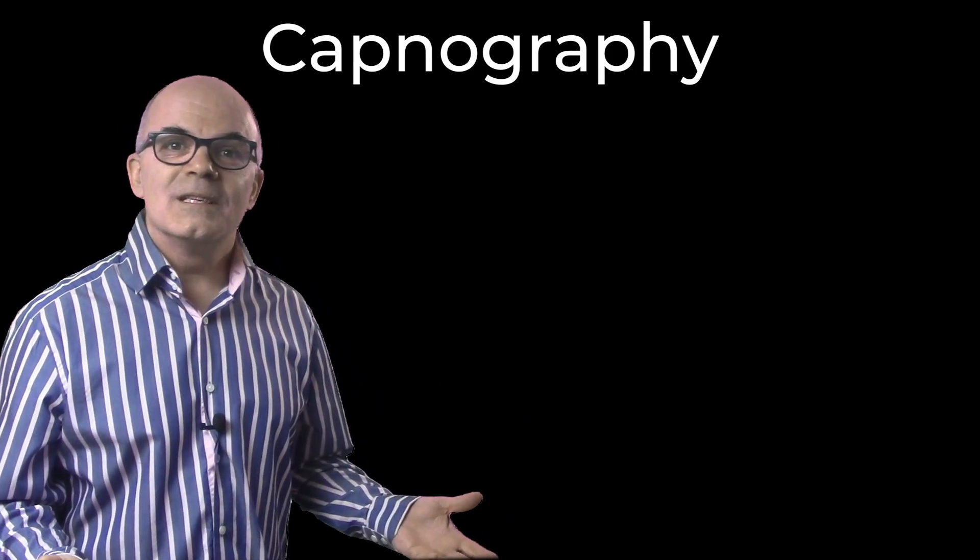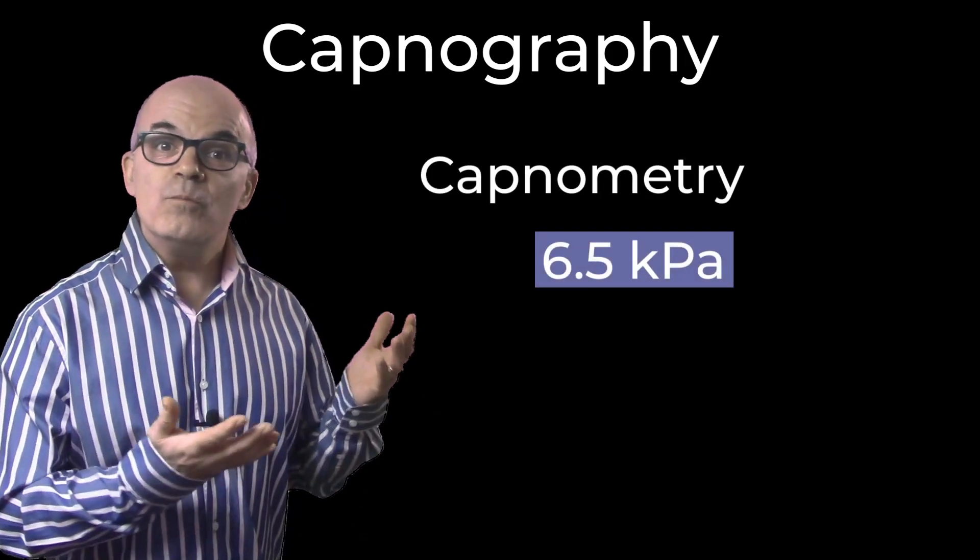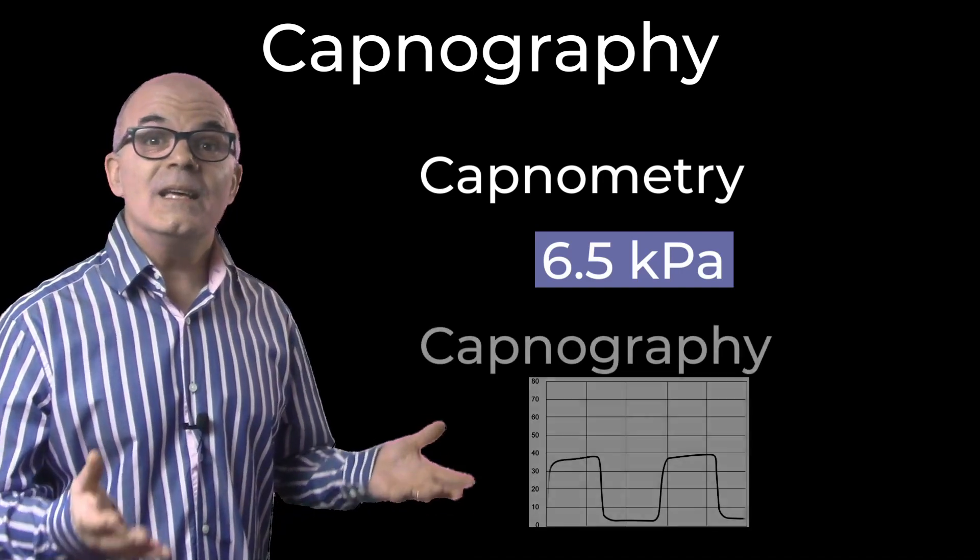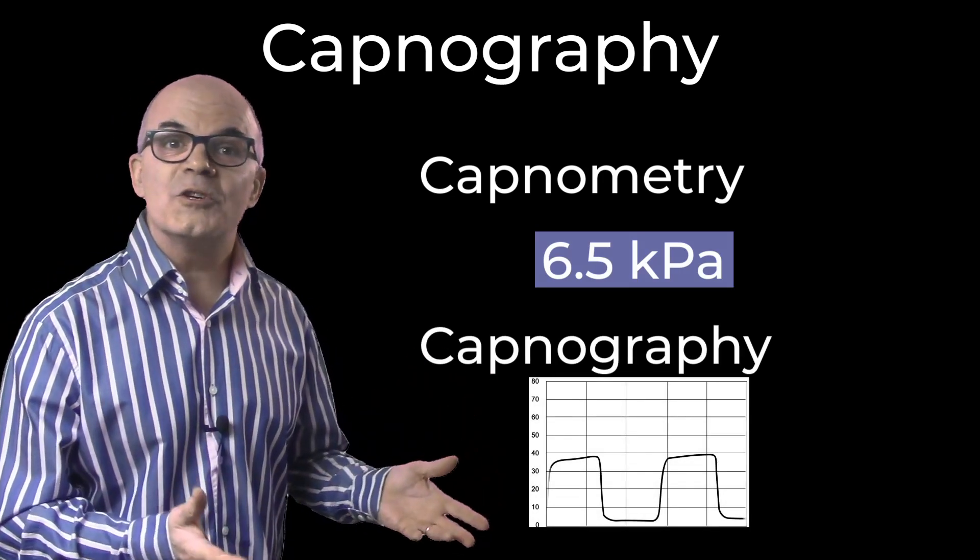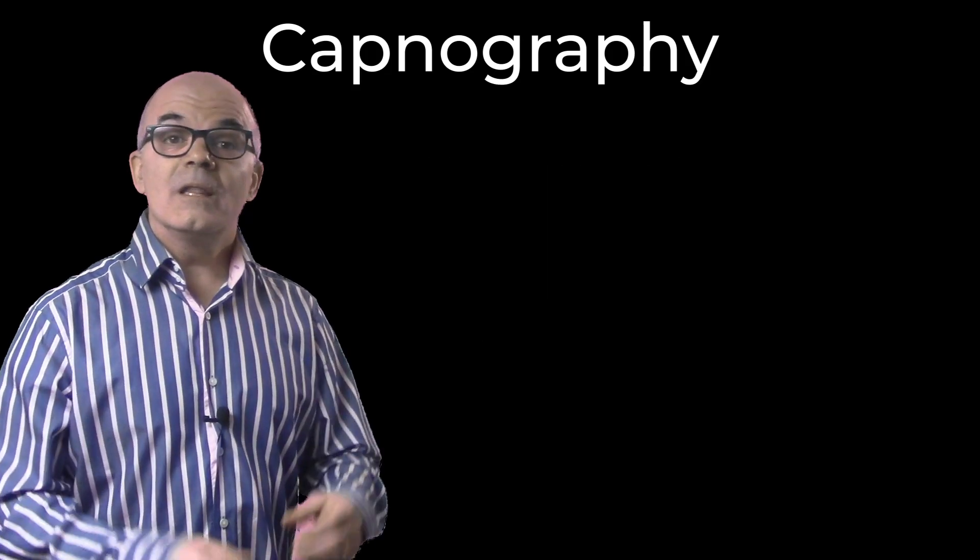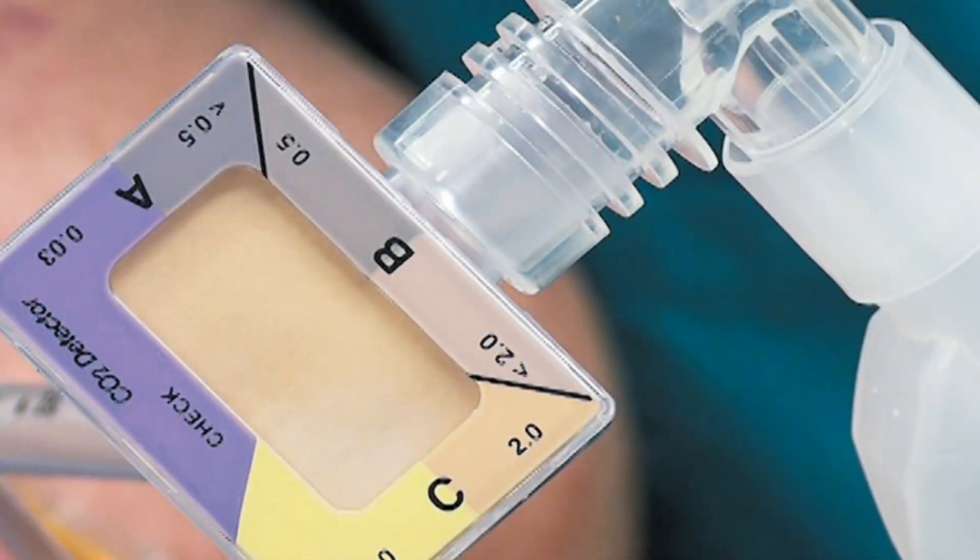Some definitions. Capnometry is the numerical display of CO2. Capnography is the graphical display of CO2 versus time, the waveform. There is also colorimetric capnography, which is where a pH-sensitive filter changes from purple to yellow when it detects CO2.